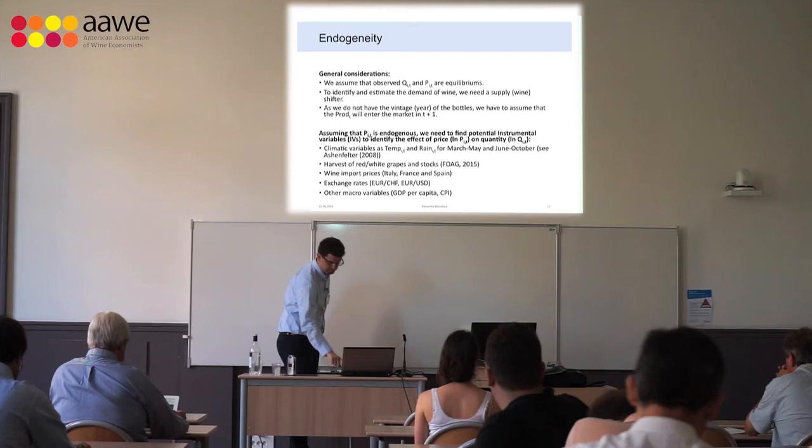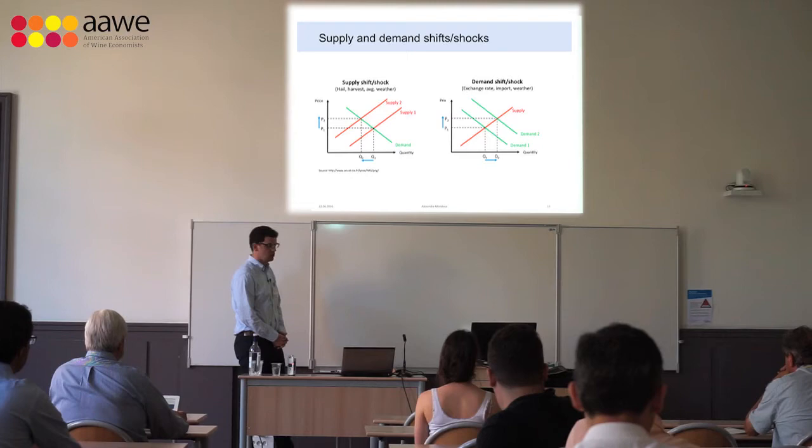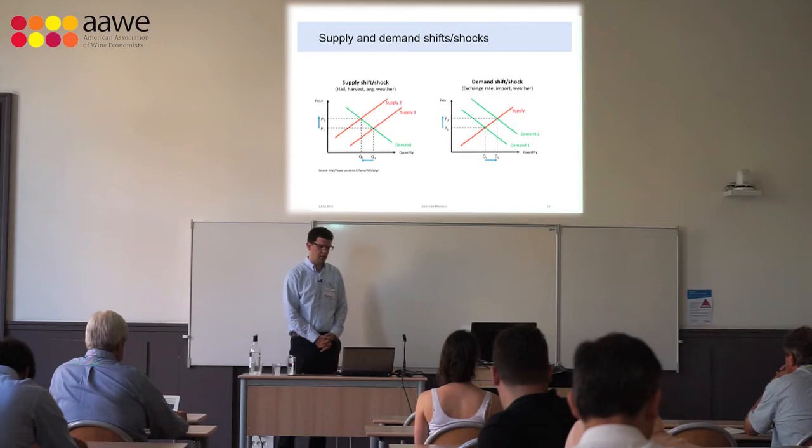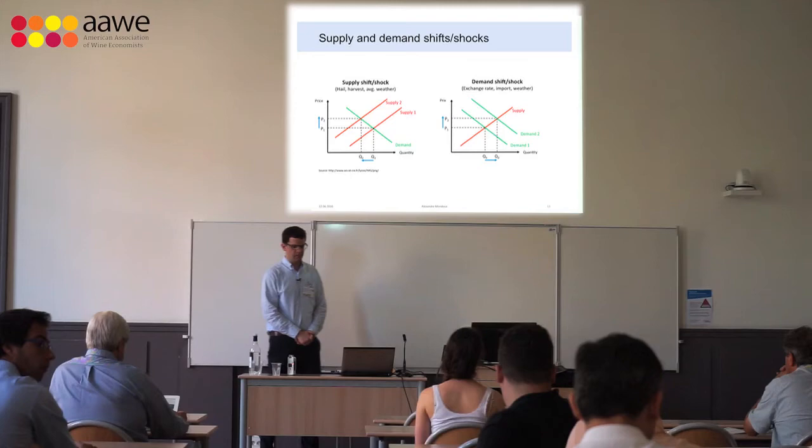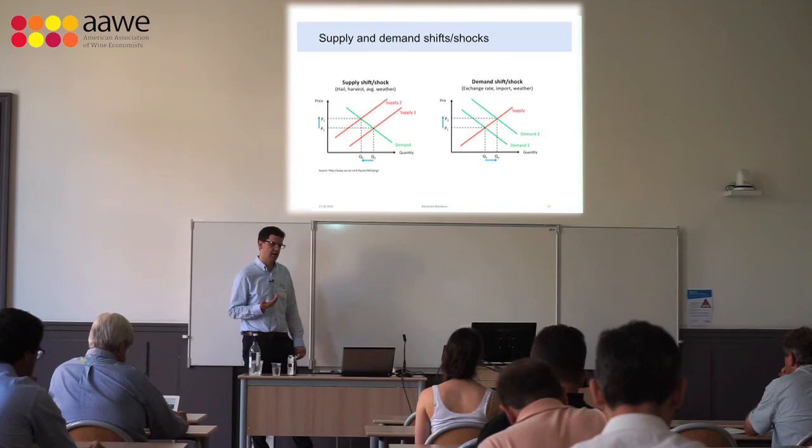This is an example of supply and demand shifts. On the supply side, we can have weather shocks like hail, the harvest, and average weather. On the demand side, we identified the exchange rate, import prices, and weather in general — especially for rosé wine, for which we find this strong correlation.